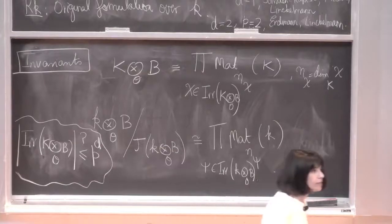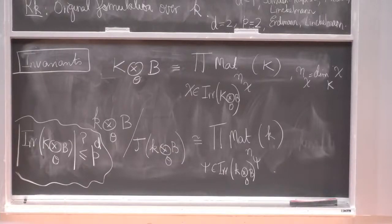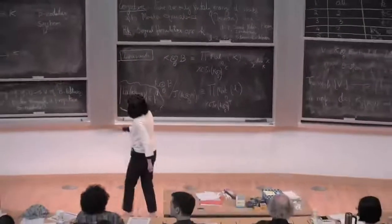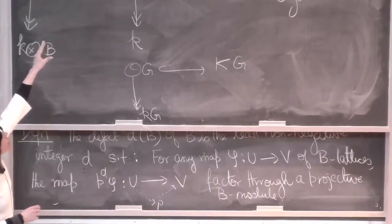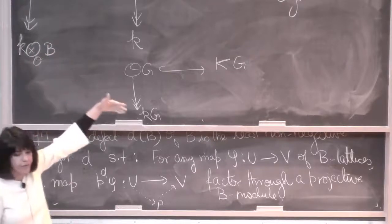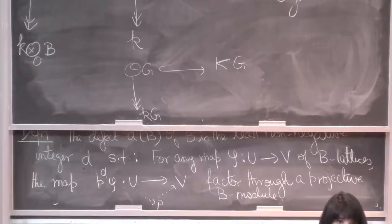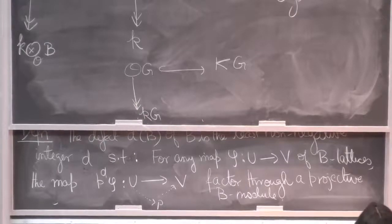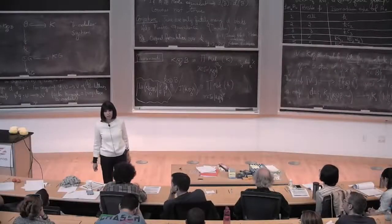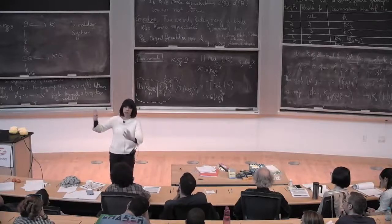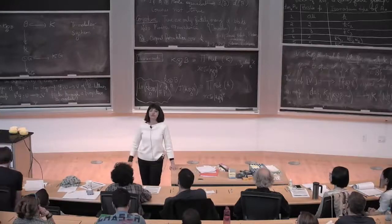The way to see that a defect bound exists: going to bimodules, you look at B as a bimodule over itself, you will get a number for B which is universal for all modules and maps. That's why the bimodule bound may be the best formulation. The algebra K tensor B is semisimple, so every module is killed by some power, and there is a bound, making the defect well-defined.